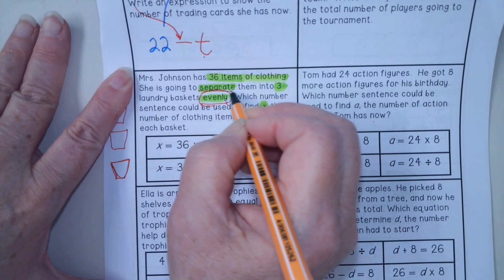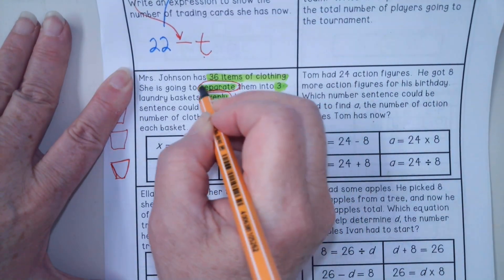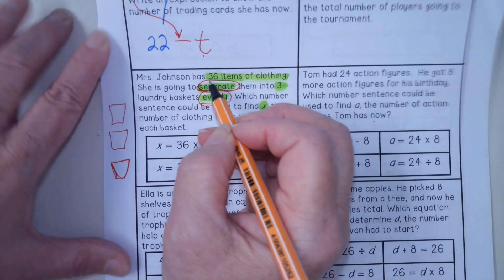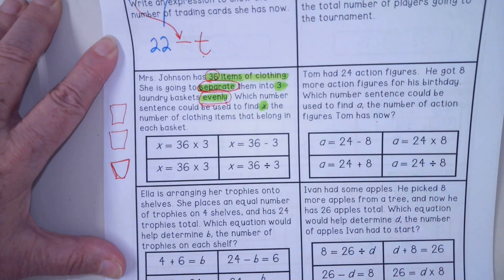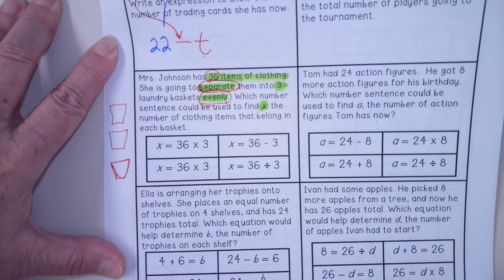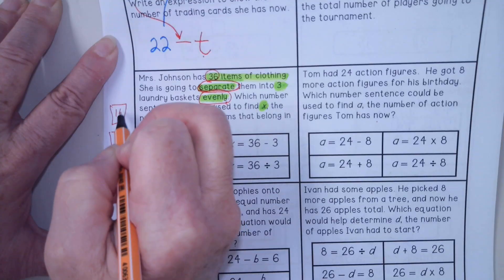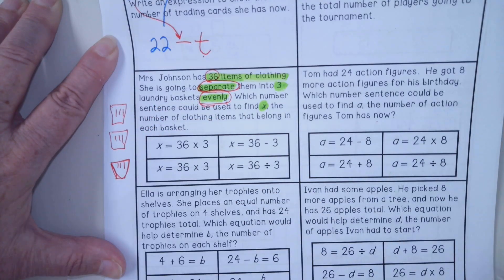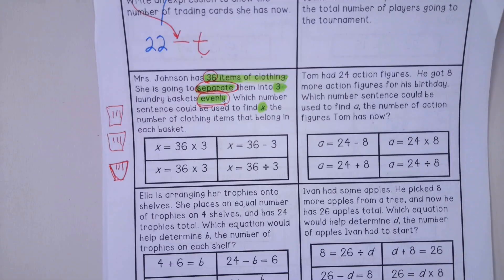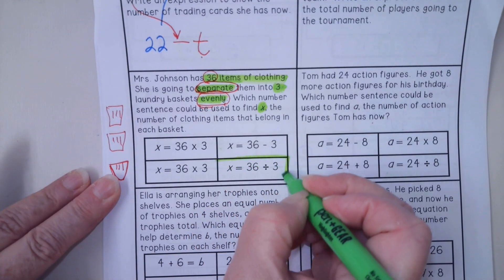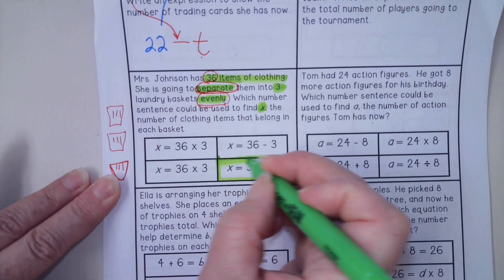But this word separately tells me I am dividing. I am dividing this 36 into three equal parts. I'm separating it into equal parts. So I would put one, two, three, four, five, six, seven, eight, nine, and so on. So that means that we would be using this equation.